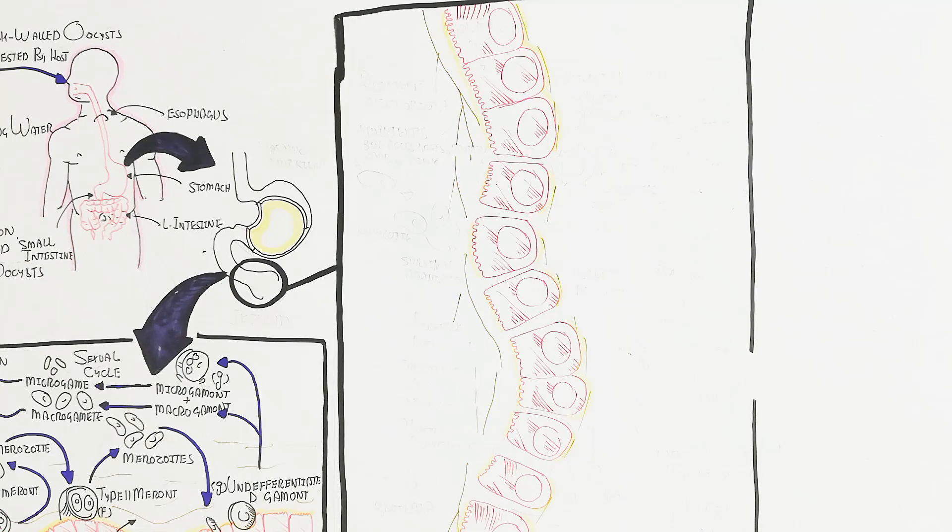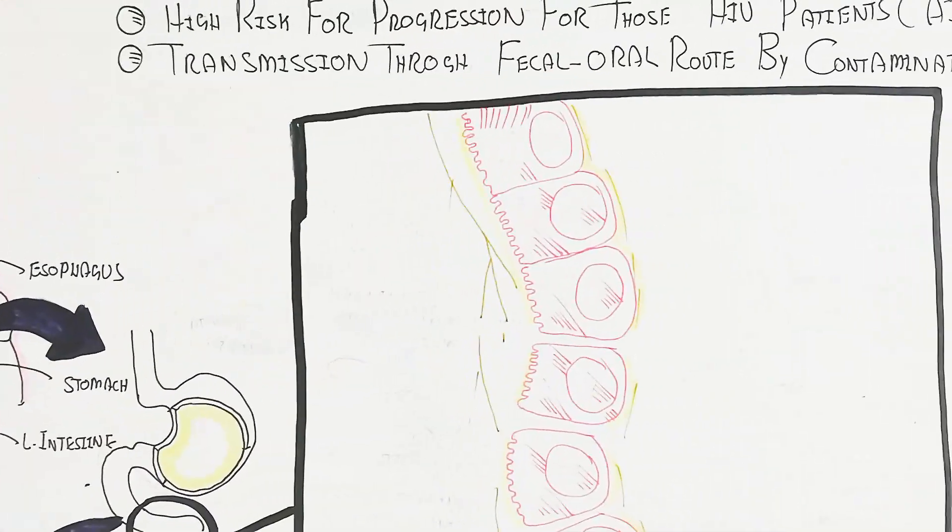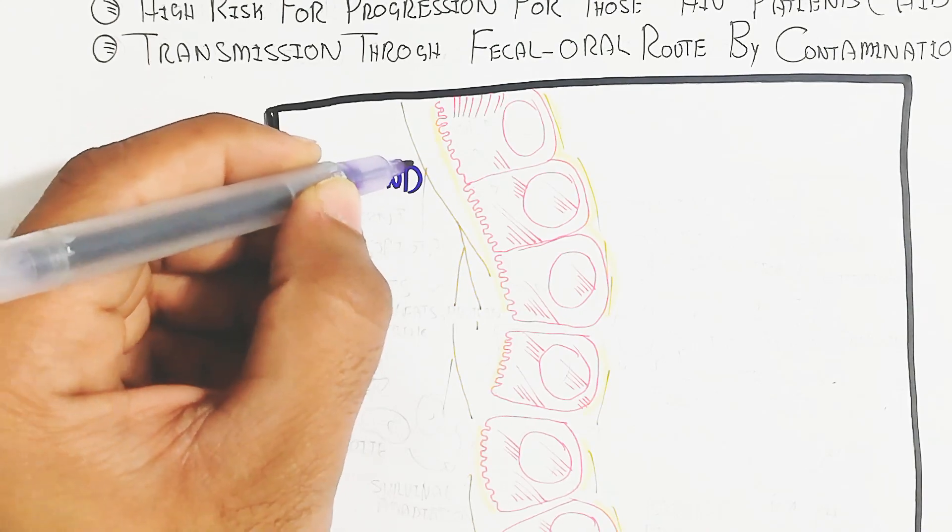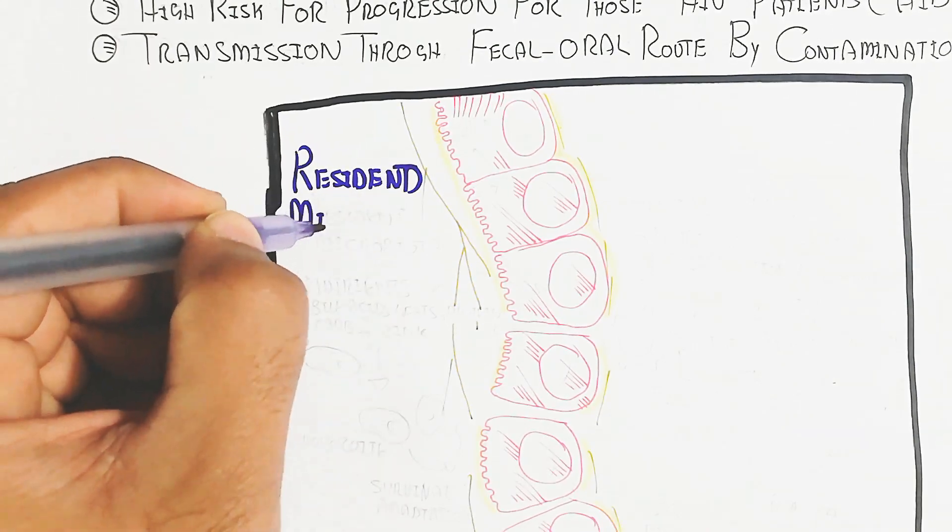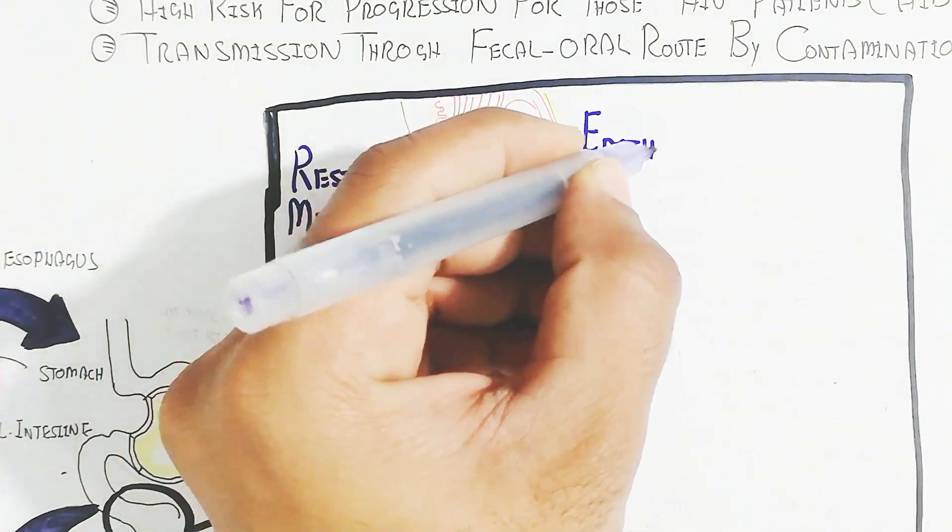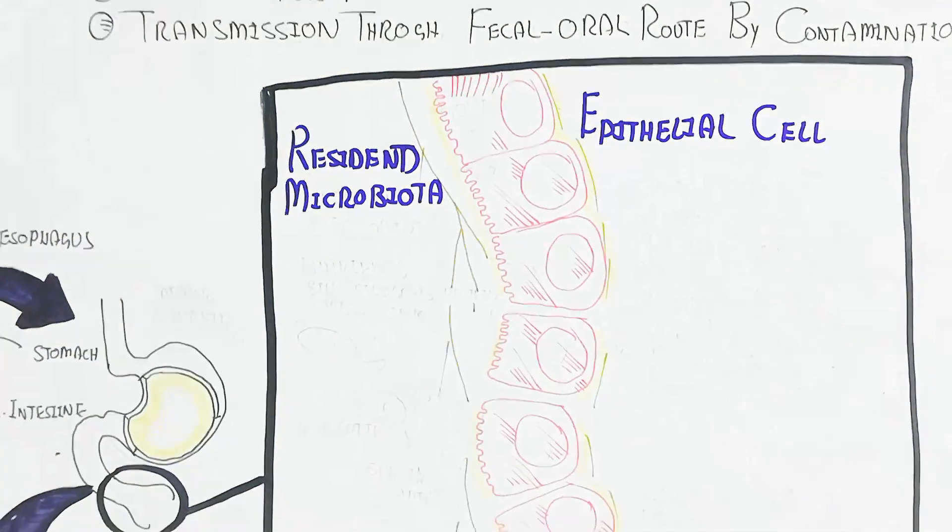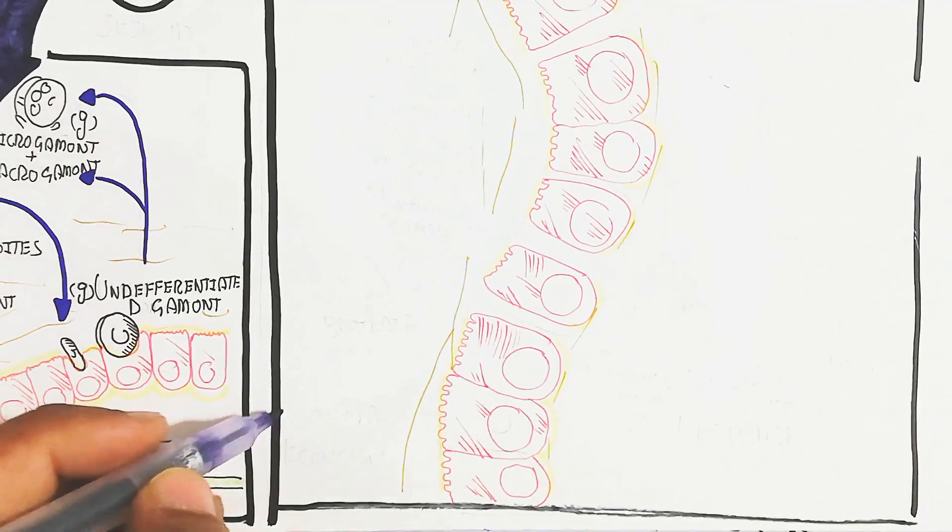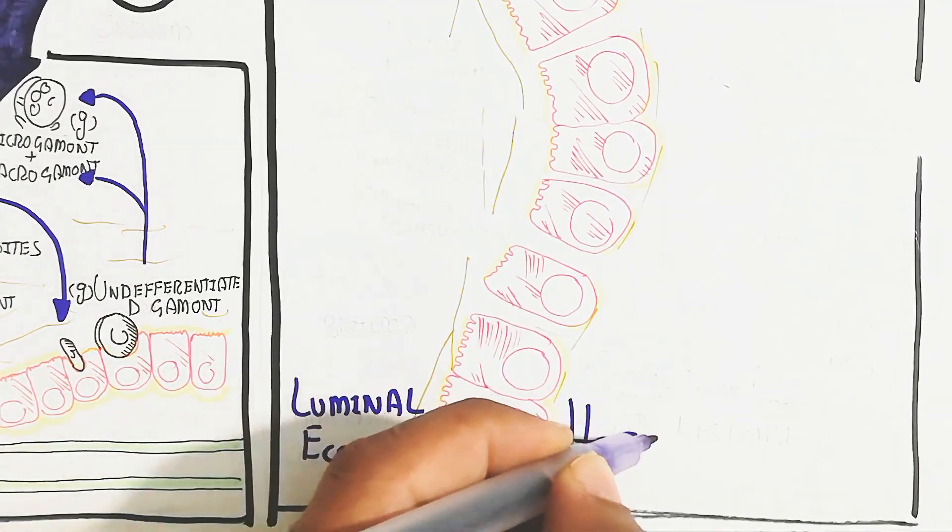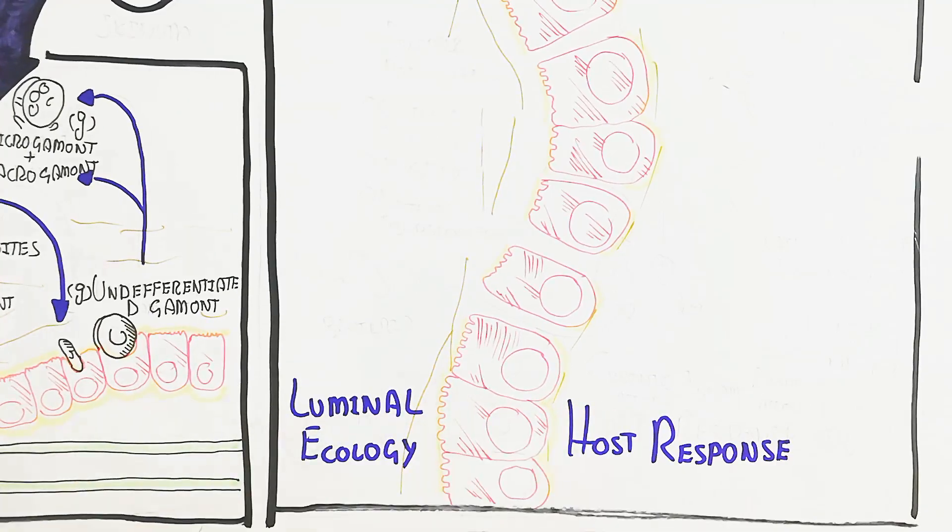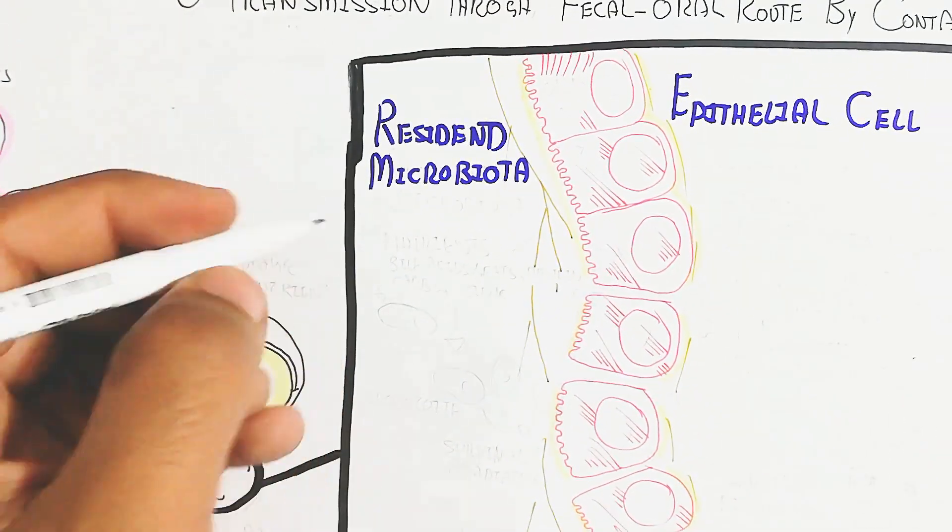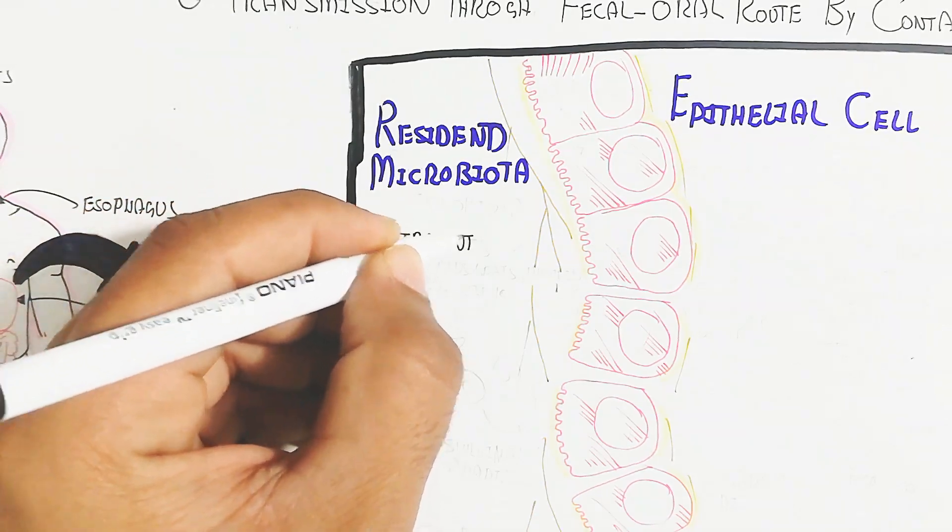This is the resident microbiota and epithelial cell. The resident microbiota contains nutrients from when we eat food. The uptake of nutrients occurs through sporozoite as well as oocyst, both thick-walled and thin-walled, which require bile acid, fats, protein, zinc, and sodium. This is the luminal ecology and the host response will occur.